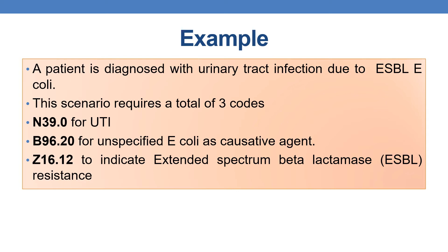In addition, because the urinary tract infection is due to ESBL E. coli — ESBL meaning extended spectrum beta-lactamase — certain microorganisms produce an extended spectrum beta-lactamase enzyme which is the primary cause for antibiotic resistance. So in order to indicate that antibiotic resistance, we need to use an additional code Z16.12 to indicate the ESBL resistance.